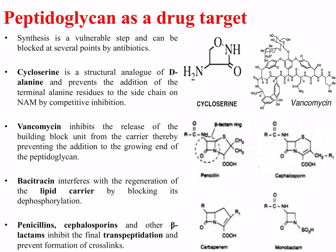This prevents the addition of each unit to the growing end of the peptidoglycan. Bacitracin interferes with the regeneration of the lipid carrier by blocking its dephosphorylation. Penicillins, cephalosporins, and other beta-lactams inhibit the final transpeptidation reaction, which links the pendant peptides to form an interpeptide bridge between the NAM units, preventing the formation of cross-links.